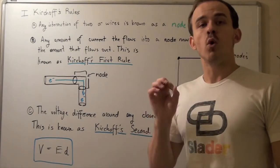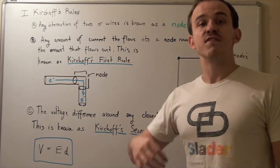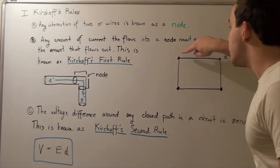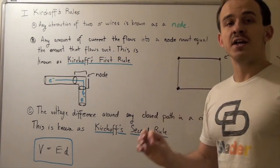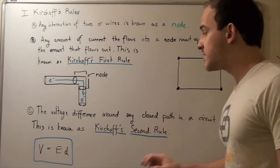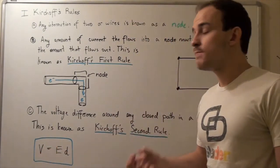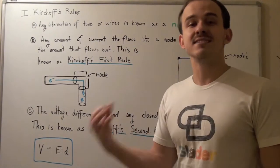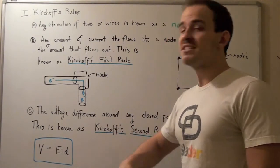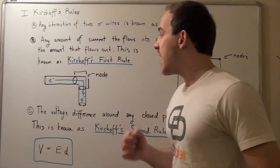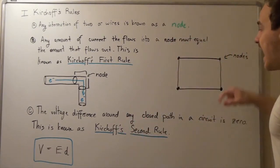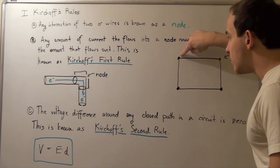If we want to find or calculate the voltage difference between this point and that same point, we will get a value of zero. That's because voltage is defined as the electric field multiplied by distance. Distance between some charge Q1 and some charge Q2. That means if we're looking at a distance of D equals zero...